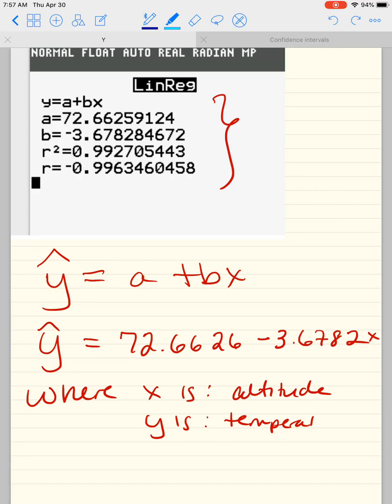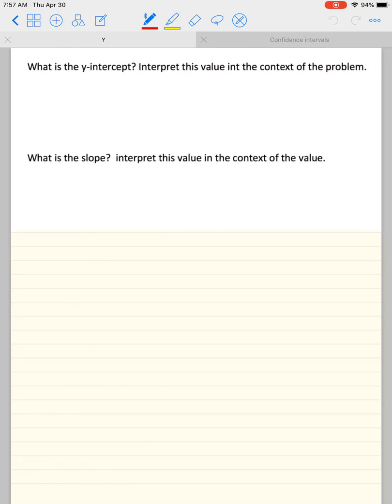So my slope is negative. And x, you must tell the reader where x is and where y is. It's called defining your variables. Remember, x is the altitude and y is the temperature. You can also just write that straight up in here instead of defining it down there.